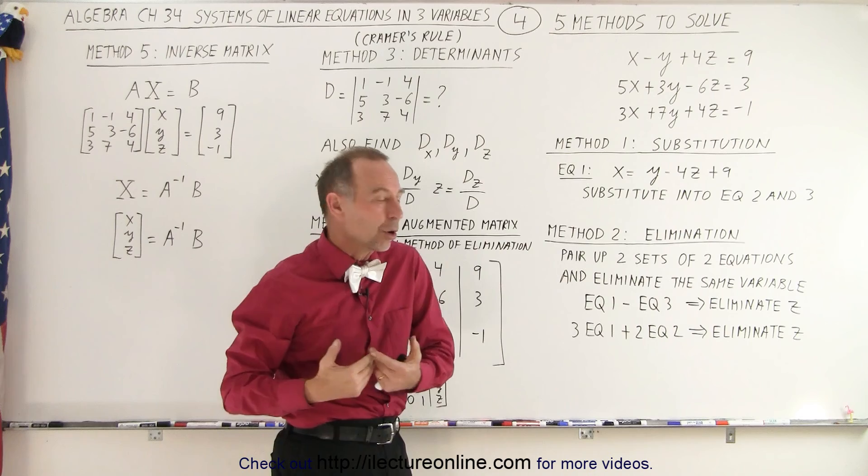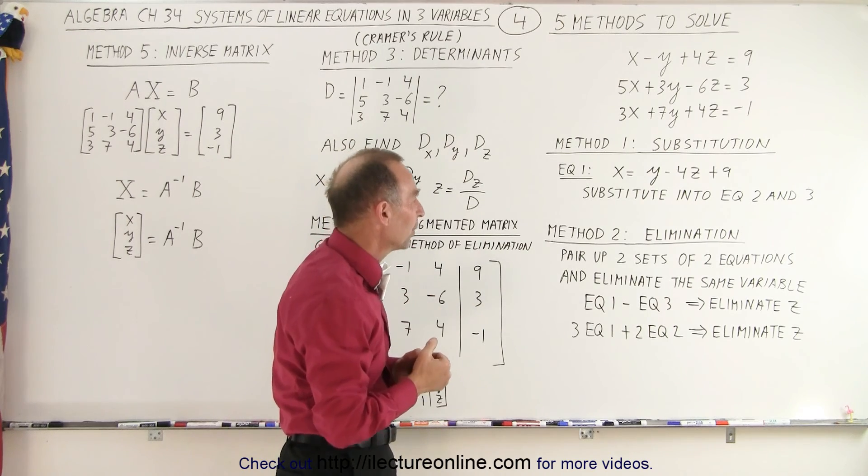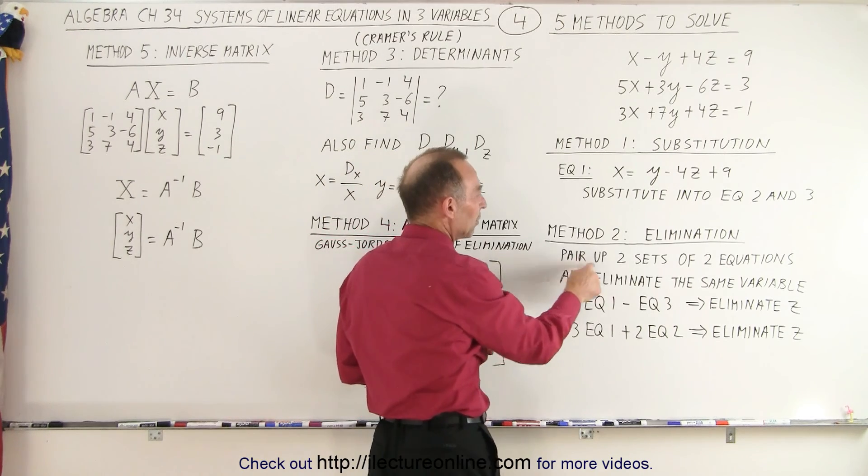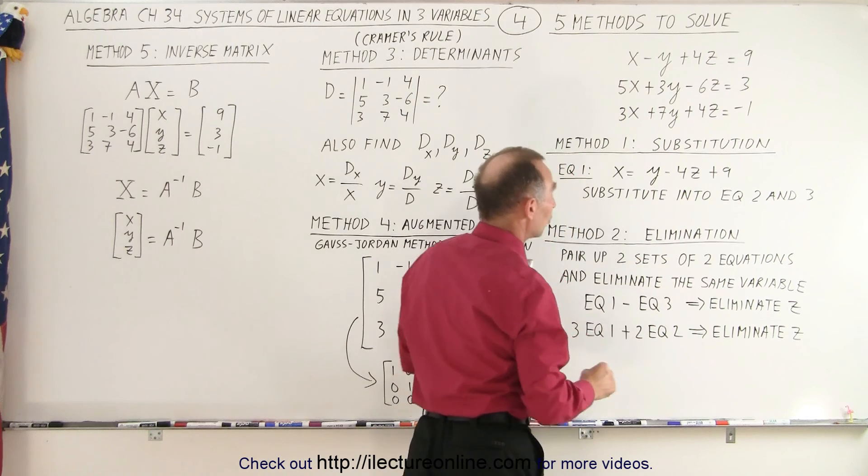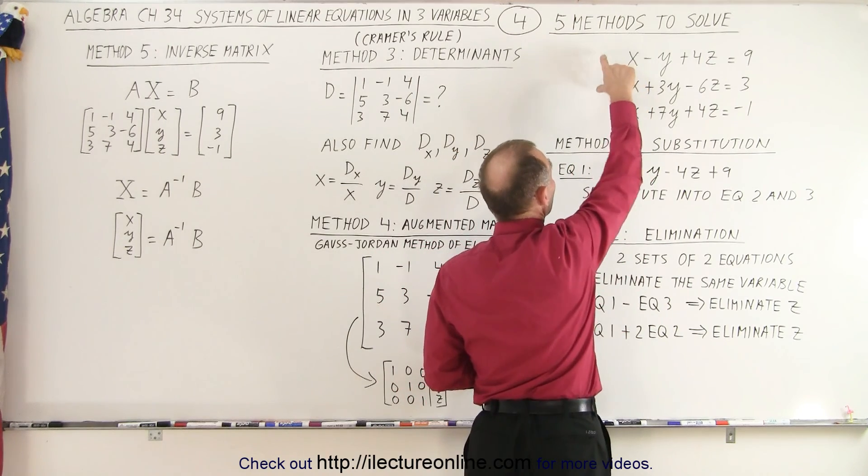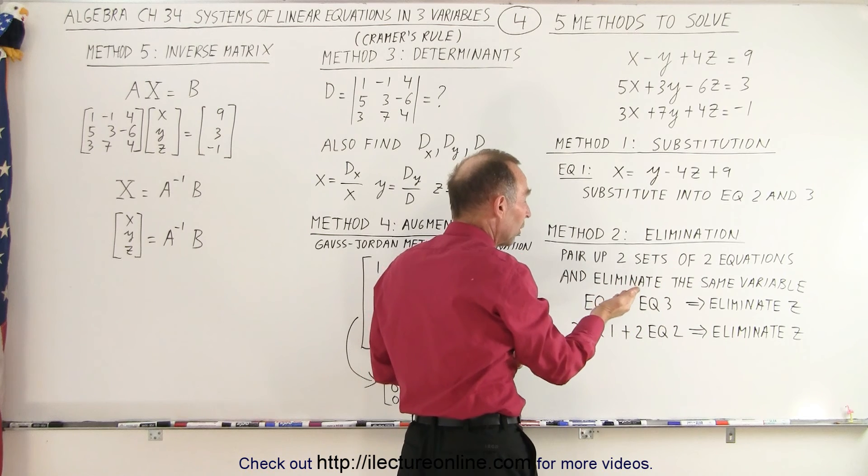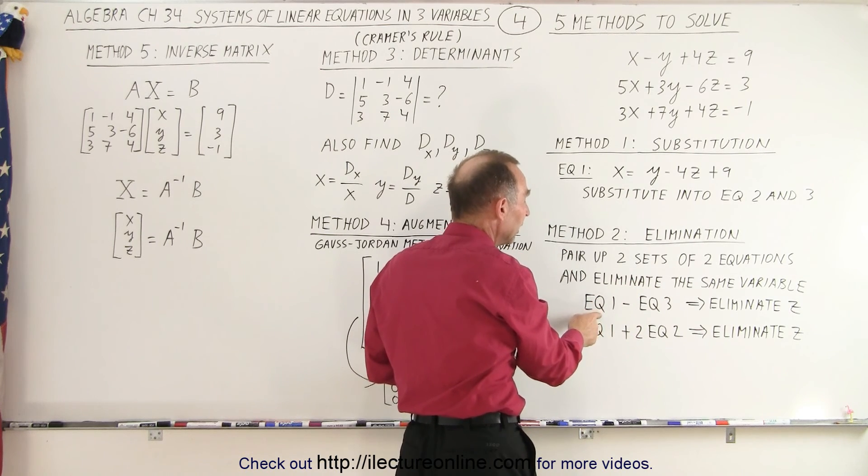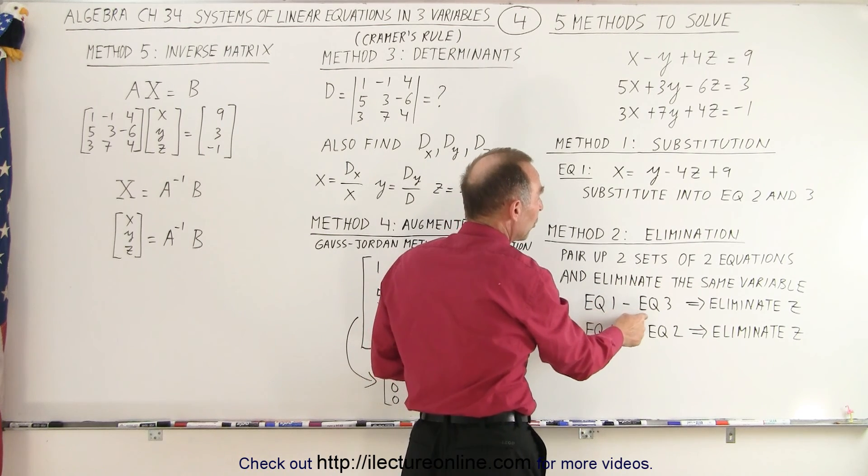Or we can use the direct method of elimination. What we want to do is we want to pair up two sets of two equations. For example, take those two together, take those two together. Well, in this example, what I did was I took equation one and subtracted from that equation three.